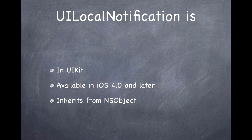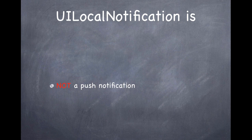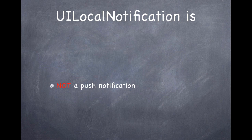UILocalNotification is part of UIKit, available in iOS 4.0 and later, and inherits from NSObject. What a local notification is not is a push notification. The two can be handled very similarly, but today we are not talking about push notifications. A push notification is when some event happens, usually from a web server, and information is passed through Apple's push notification service to the device — like Instagram notifying you that someone liked your photo. Local notifications are timed on your phone and completely local to your iOS device; they won't appear on another device even if the same app is installed.